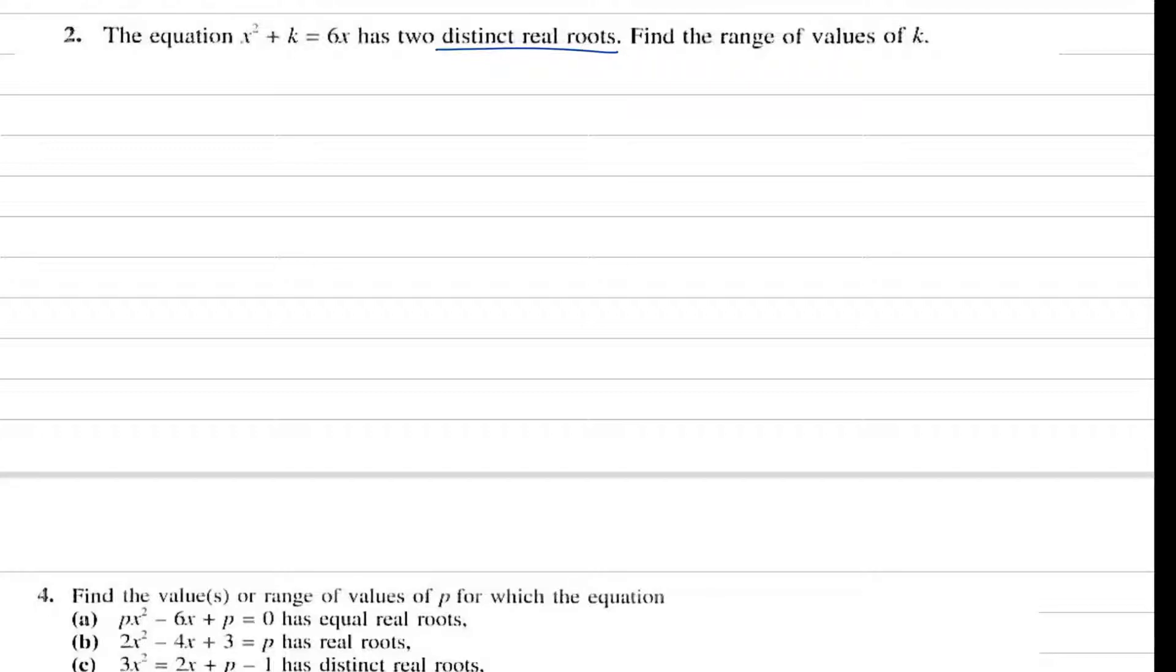So whenever you have such keywords - distinct real roots, real and equal roots, or no real roots - you can underline them. Find the range of values of k. We need a range, not exact values, so our answer will be in inequality form, greater than or less than.